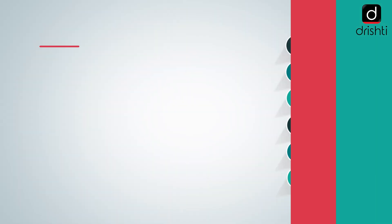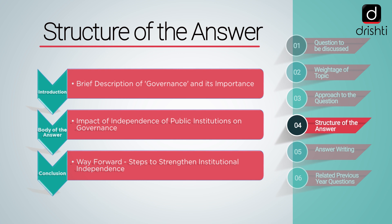Moving towards how to structure the answer. The first part of the answer will be the introduction, which will include a brief explanation of the term governance and its importance. The second part, that is the body, will be about the impact of the independence of public institutions on governance in a democracy. Lastly, in the conclusion, we will sum up by suggesting steps that can be taken for strengthening the independence of public institutions.